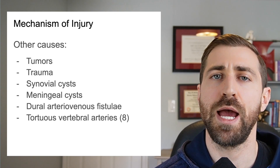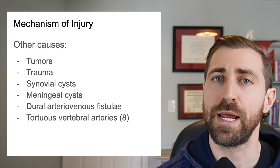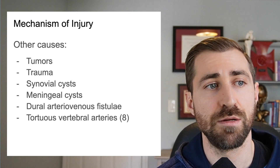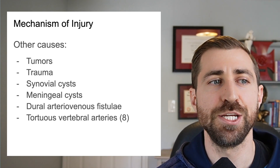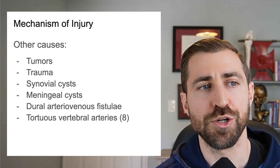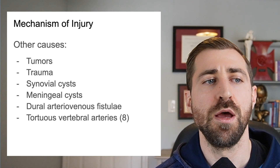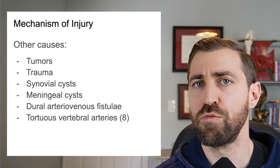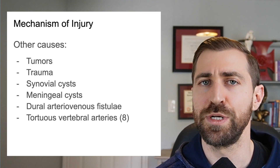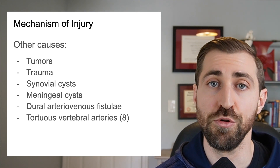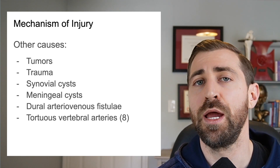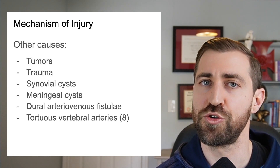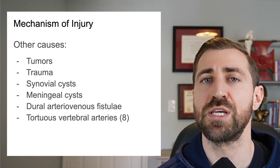Cervical radiculopathy can also happen for a variety of other reasons that are important to keep an eye out for: a tumor, trauma from a whiplash injury or car accident, a fall, synovial cysts, meningeal cysts, dural arterial venous fistulae, and tortuous vertebral arteries. When a patient comes through the door, you're going to rule out medical red flags. If there are no red flags, you initiate treatment. If they're not improving over time, send them back to the physician for imaging to check for these things.